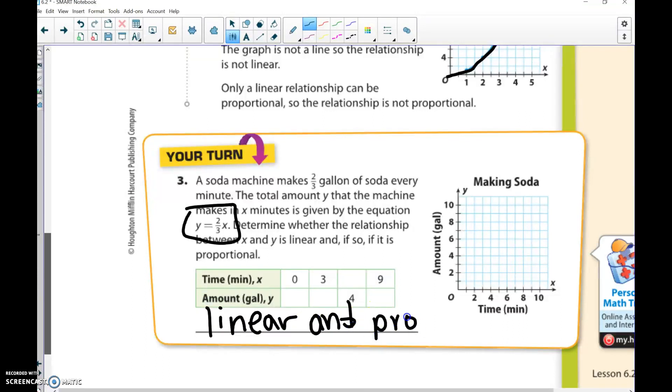We'll fill in the rest of this box. If zero goes in for my x, 2/3 times 0 is 0. Three goes in for x, 2/3 of 3 is 2. Let's figure out this nine one quick, so 2/3 of 9 would be 6.